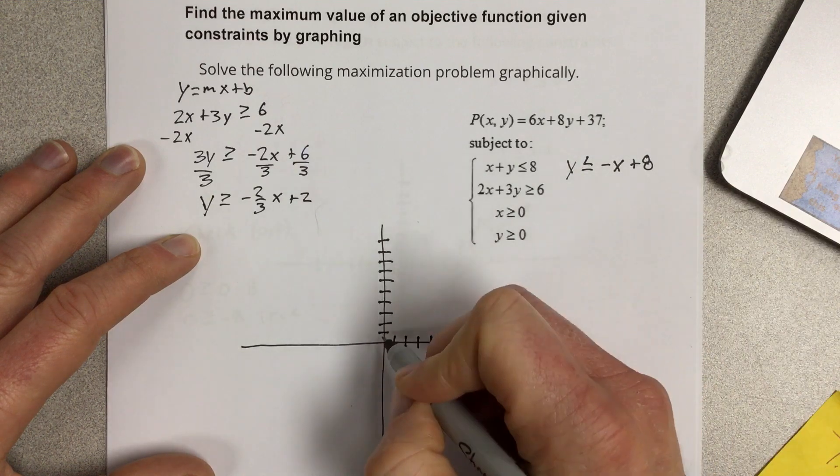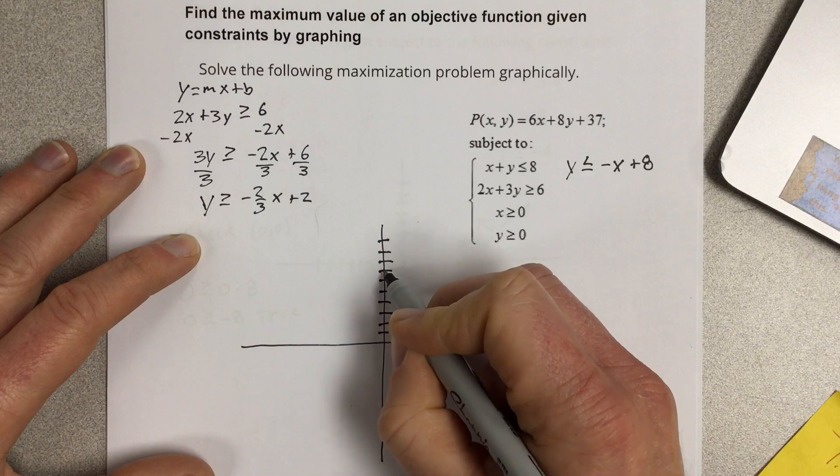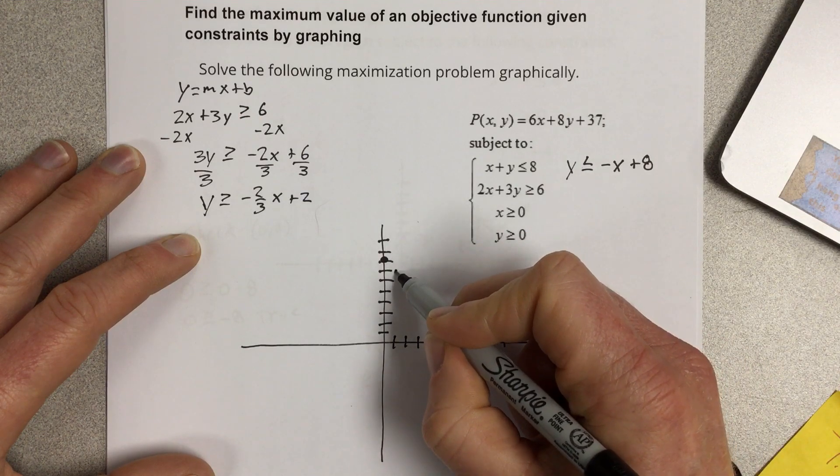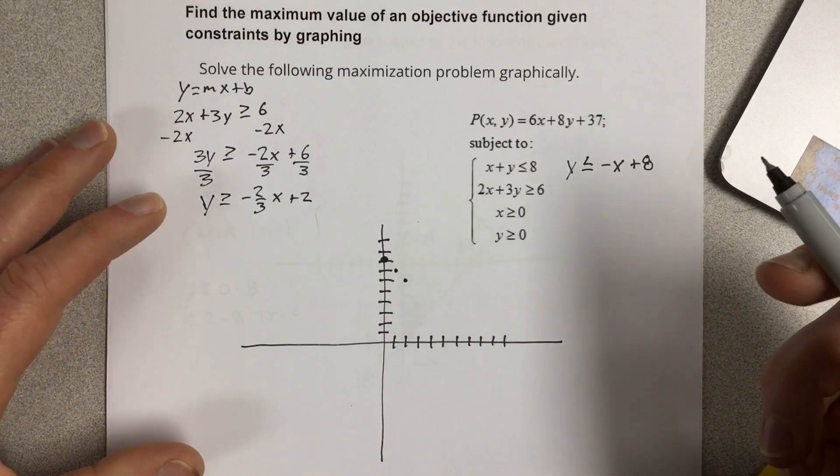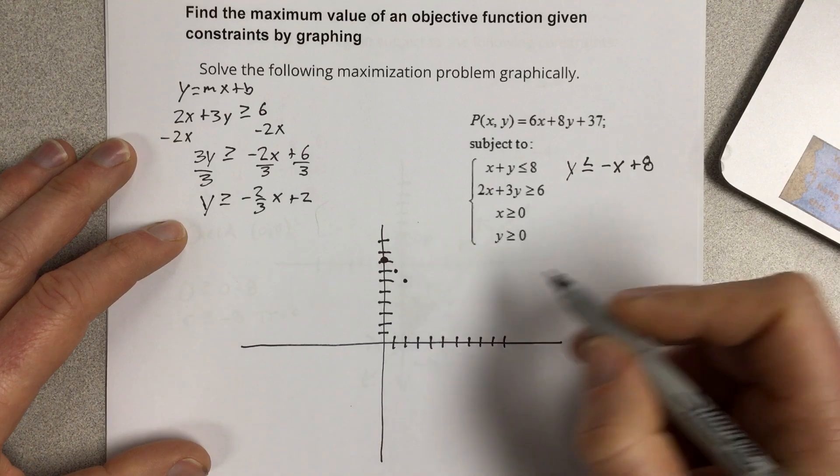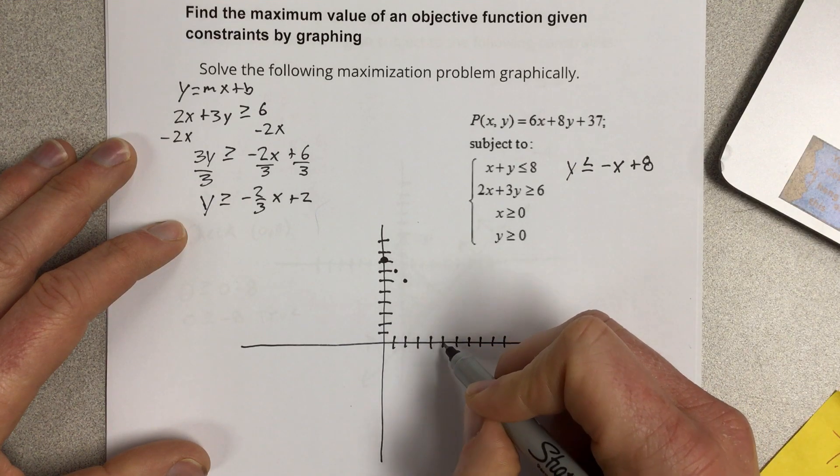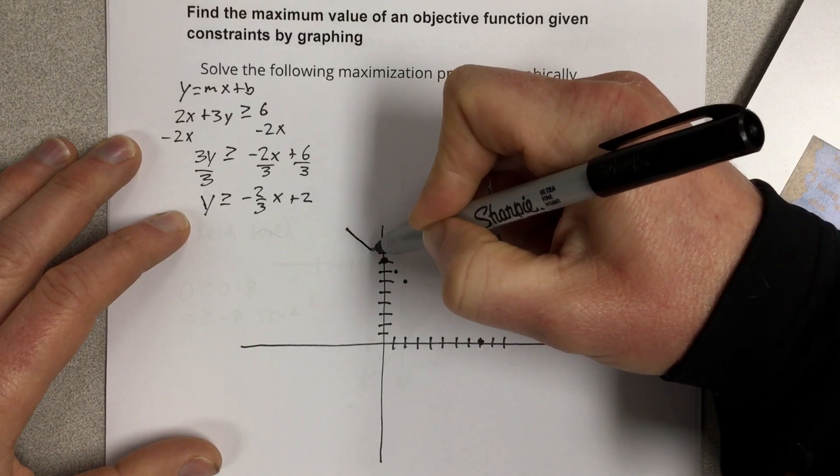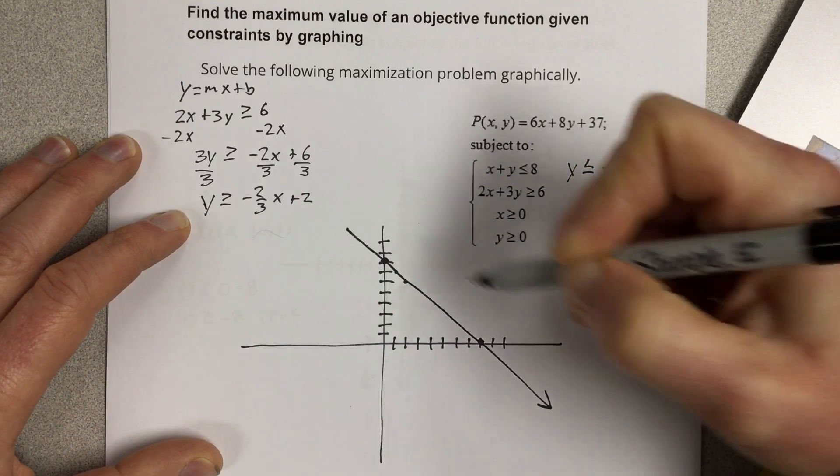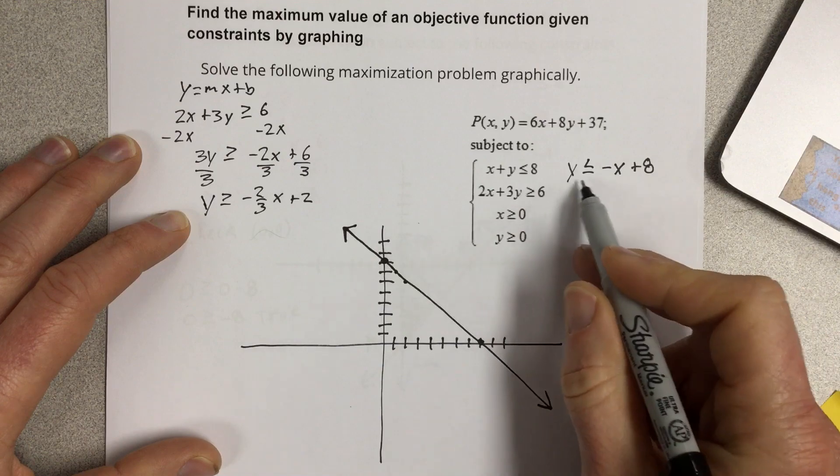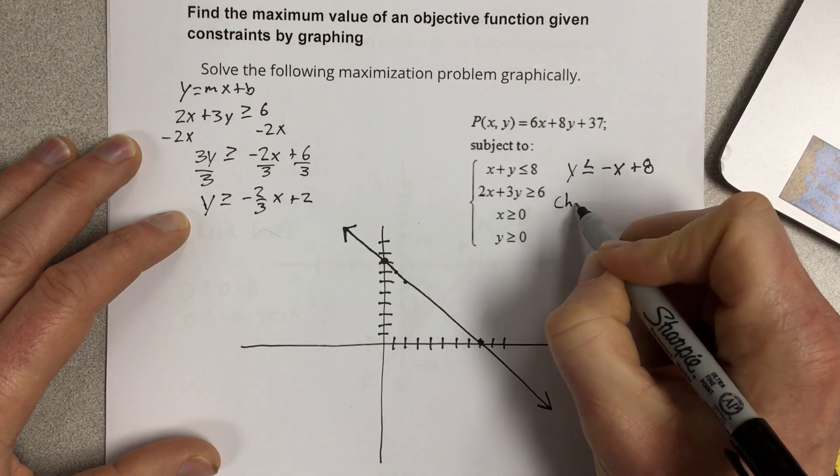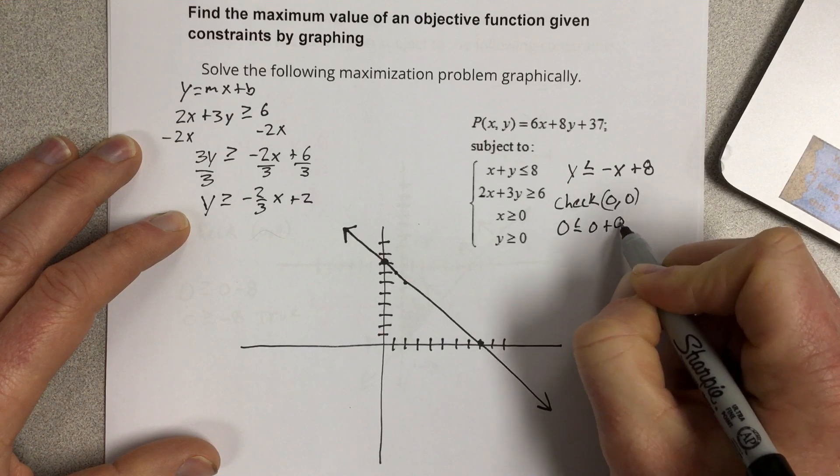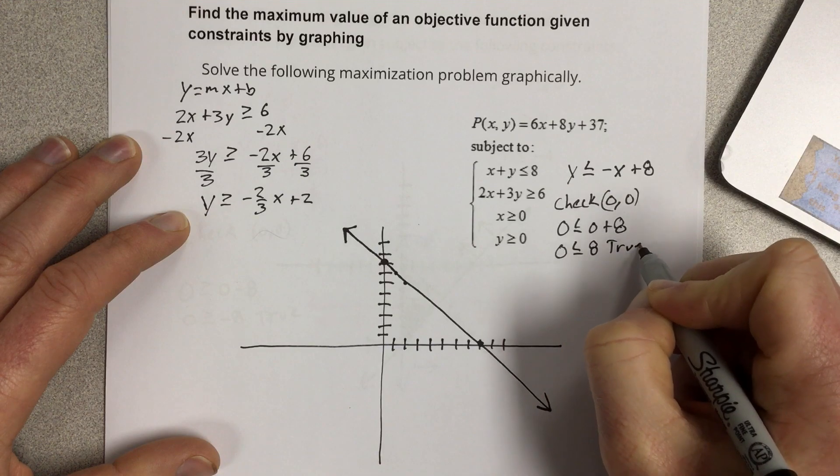Y-intercept for this first equation is 8. So we'll go up to 8. And if I go down 1 over 1 over and over again, I'm going to end up at a value of 8 down here as well. So my line is going to go straight through these dots right here. And I'm going to be shading, it says y is less than, so I'll be shading underneath. We can check it with 0, 0 to make sure. So that's 0 less than or equal to 0 plus 8. 0 less than or equal to 8, that's true.